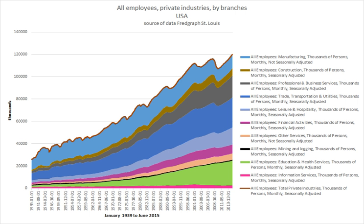In the Canadian province of Ontario, formal complaints can be brought to the Ministry of Labour. In the province of Quebec, grievances can be filed with the Commission des normes du travail.